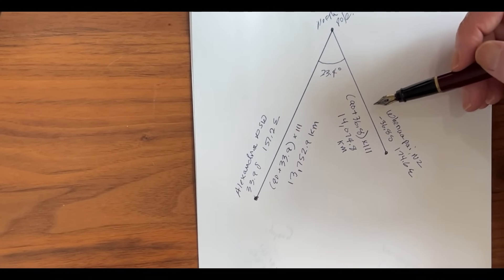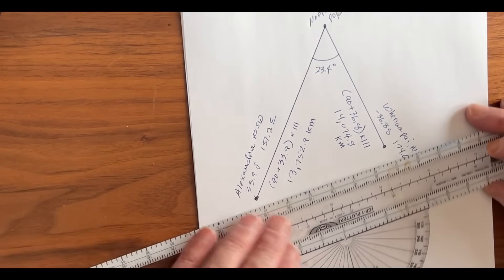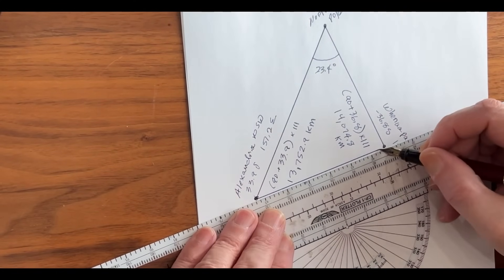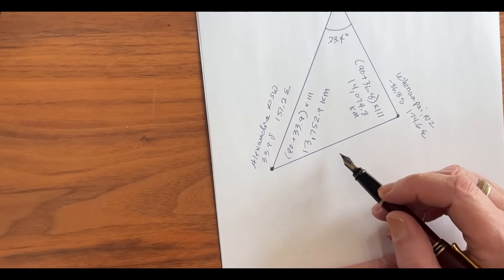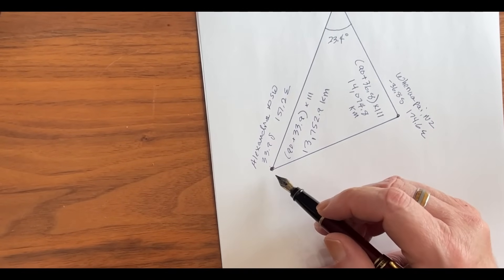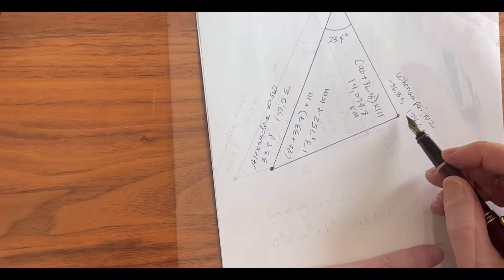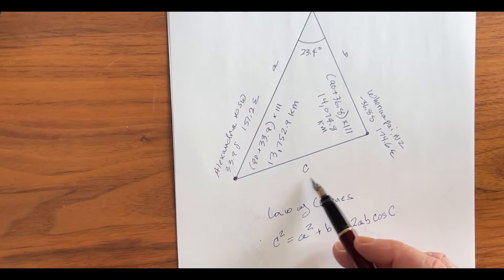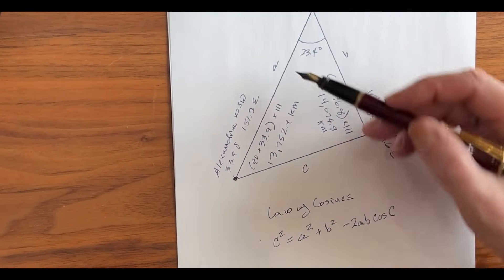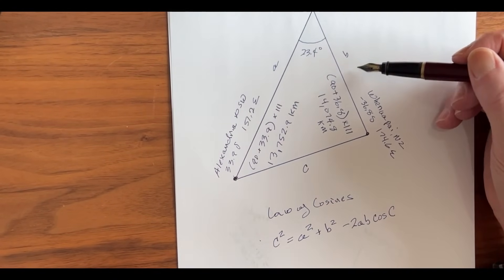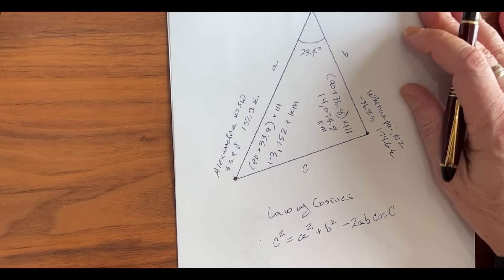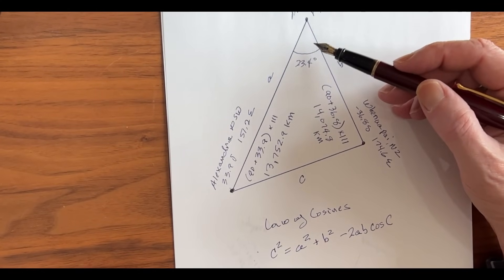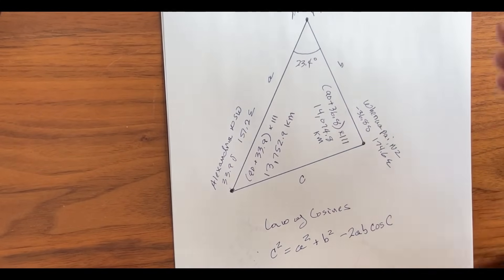And we can use something called the law of cosines to solve for this third side of the triangle. On a flat earth, that should be the distance between the station in Alexandria and the station in Takapuna. The law of cosines says that c² (and c is the side we're looking for) equals a² plus b² minus 2ab times the cosine of this angle of 23.4 degrees. Let's go ahead and do the math.